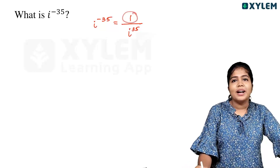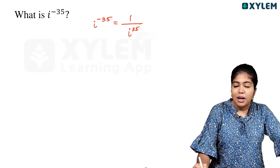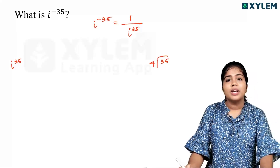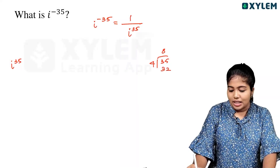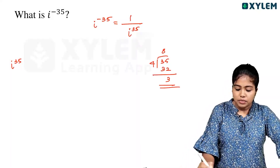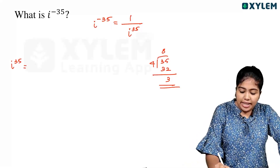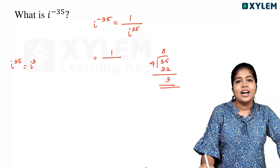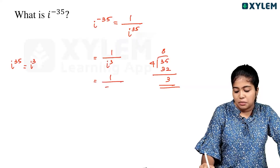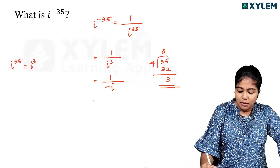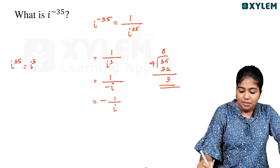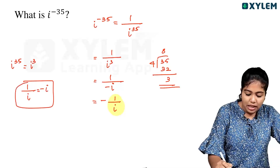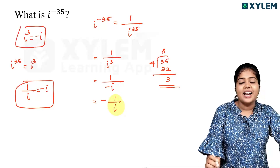We have a number in the denominator. If i raised to 35, we divide 35 by 4: 8 times 4 is 32, and 35 minus 32 gives remainder 3. So i raised to 35 equals i cubed, which equals minus i. Therefore 1 by i cubed is 1 by minus i, which is similar to minus 1 by i. Since 1 by i equals minus i, the answer is i.